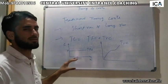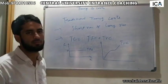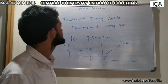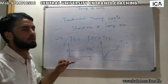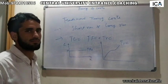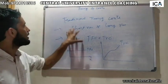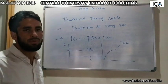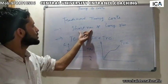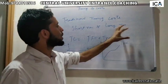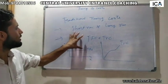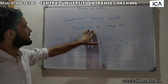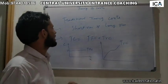In theory of costs, we have two types of theories. One is the traditional theory of costs and the second one is the modern theory of costs. Let me first explain the traditional theory of costs. Traditional theory of costs divides the whole period into two: one is the short-run period and the second one is the long-run period.